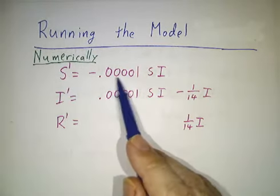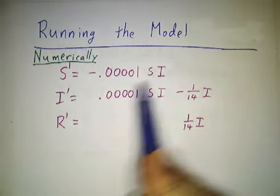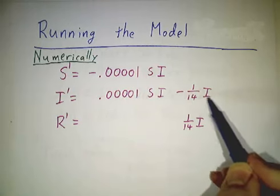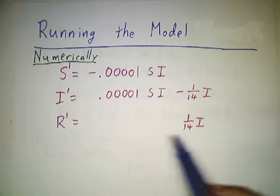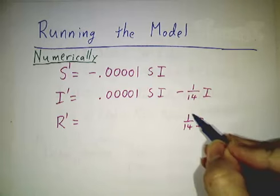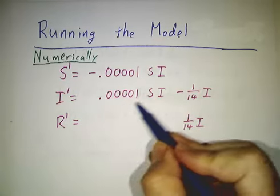We said that S' was minus a constant times S times I. I' was plus that constant times S times I, minus another constant times I. And R' was plus that constant times I. We call this constant B, we call this constant A.